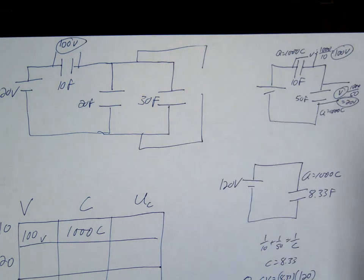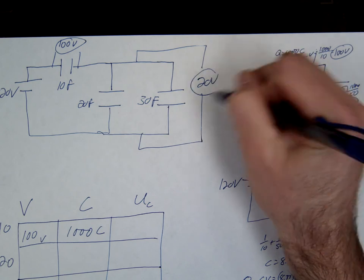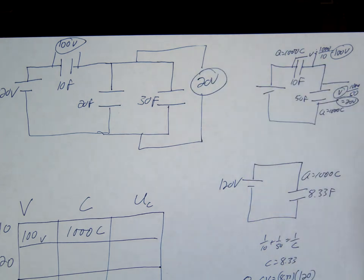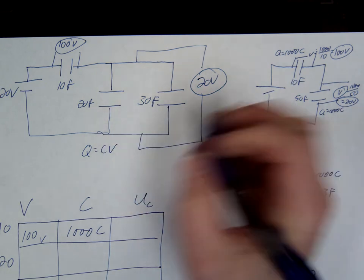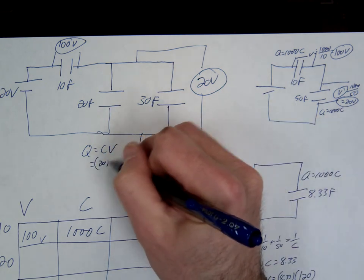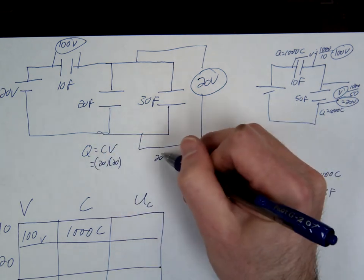This one we already found, right? This is 20 volts. So we'll just find the charge for each. So Q equals CV. So it's going to be 20 times 20 and 20 times 30.